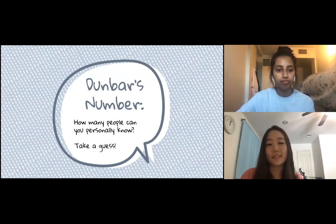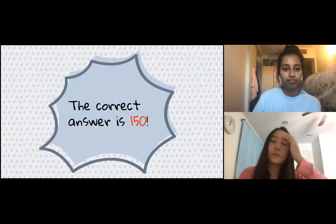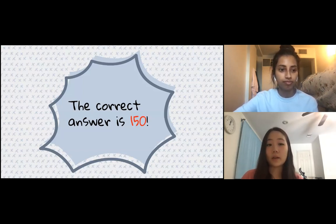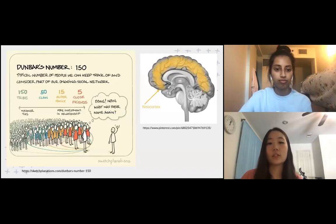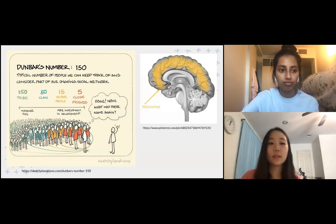Now we'll go over Dunbar's number. How many people do you think you can personally know? It is said that the average person can remember and maintain a stable social relationship with about 150 people. According to Dunbar, this number can vary based on social exposure, gender, and social identity. The average number of friends on Facebook is roughly between 150 and 200 people, the average number exchanging Christmas cards in the UK is approximately 154 people, and modern military companies also hire around 150 individuals.